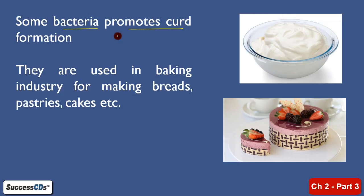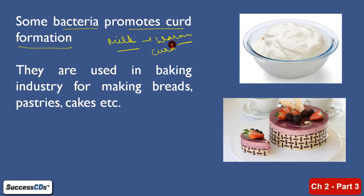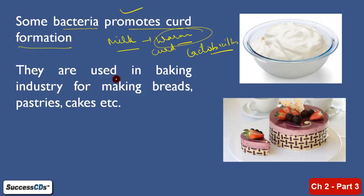Some bacteria promote curd formation. How do you make curd? You take milk, warm it up, and then you add a spoon of curd. You cover it and store it in a warm condition. When you add a spoon of curd, the Lactobacillus bacteria present in it converts the whole milk into curd. So the bacteria is promoting curd formation — it is turning milk to curd. They are also used in the baking industries for making breads, pastries, and cakes. These products which you enjoy are all actually made with the use of bacteria.